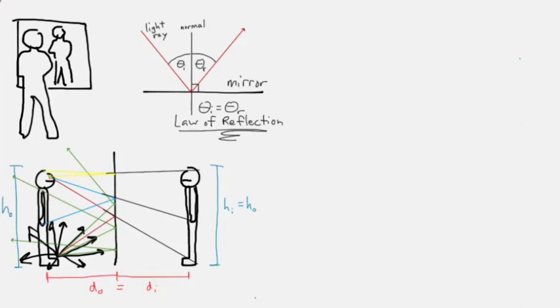You get farther from the mirror, it looks like the person behind the mirror gets smaller. So that's somebody standing in front of the mirror. But what if an object is not in front of the mirror? Is there still an image associated with that?